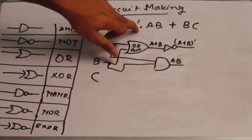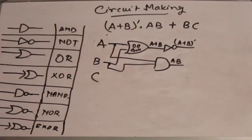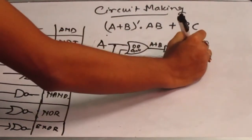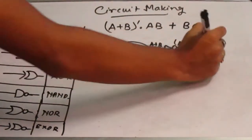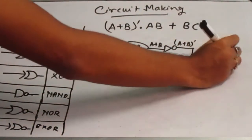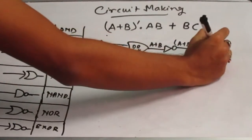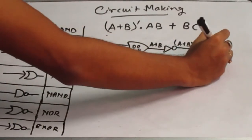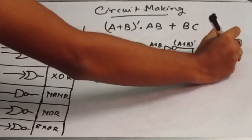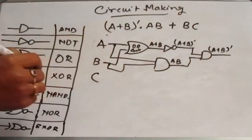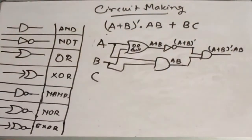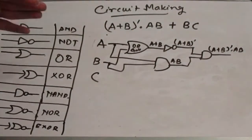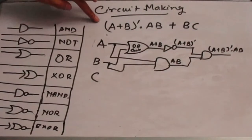Now a dot is there. Dot means AND gate again. So we are going to pass it through an AND gate, which will give us A plus B whole complement dot AB. So this will give this expression.